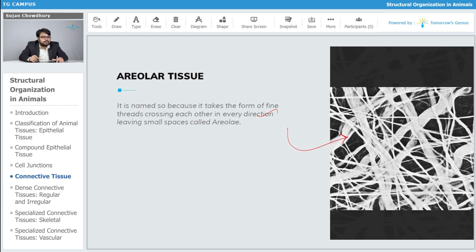You can see that the threads are crossing each other in an irregular way, and spaces are found in between. These open spaces are known as areoli.